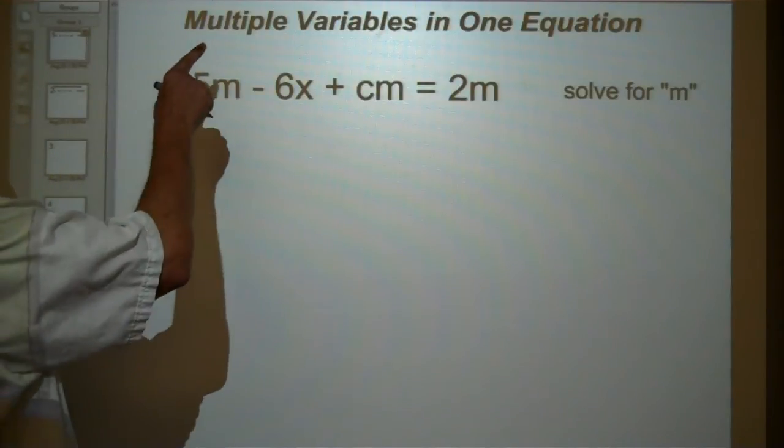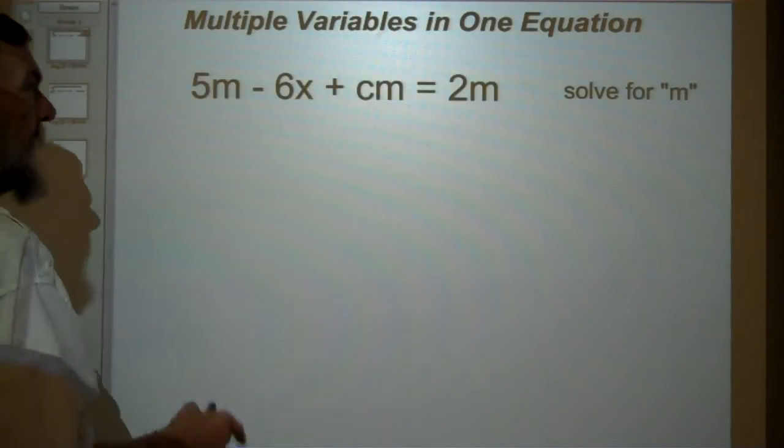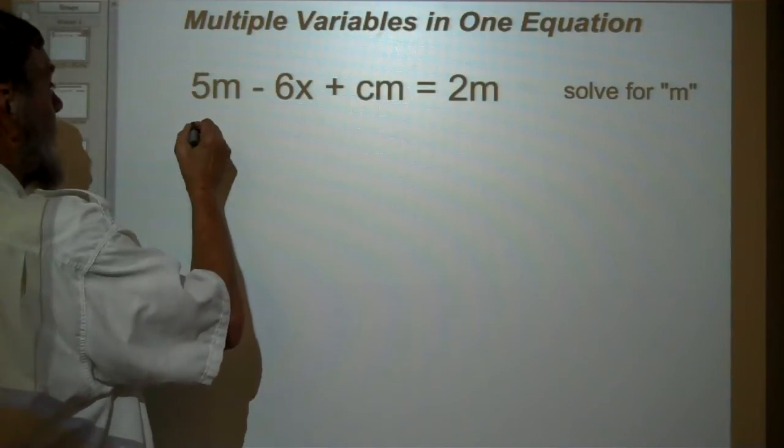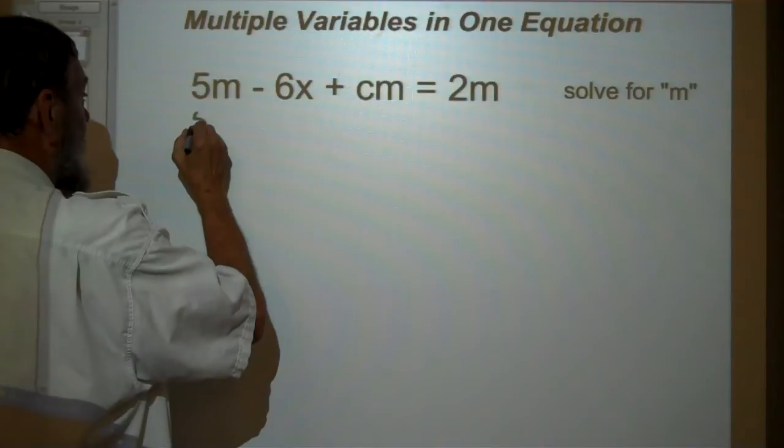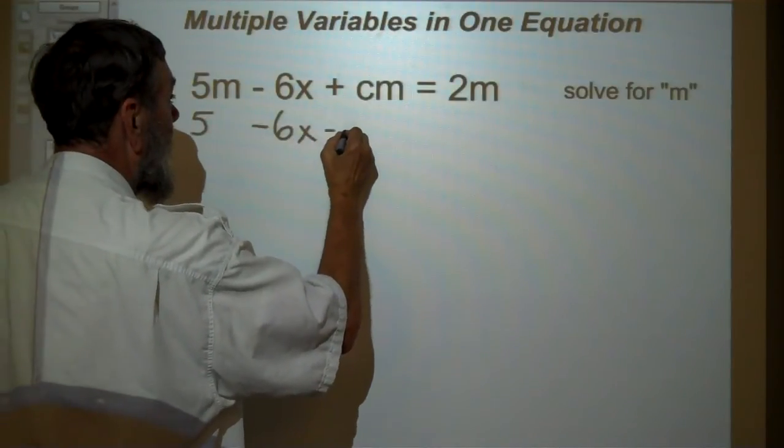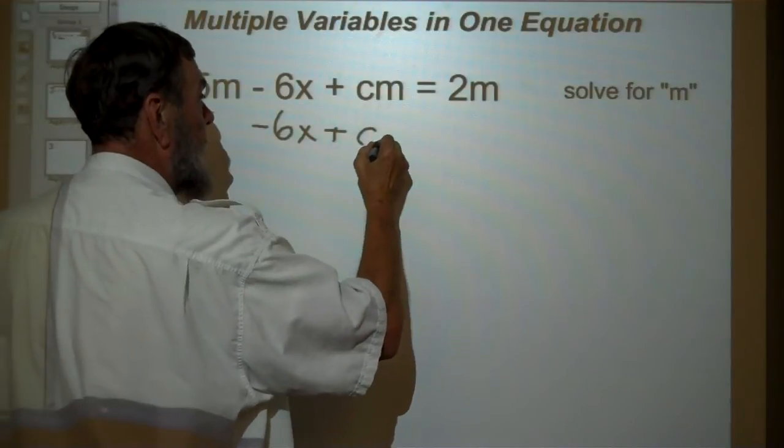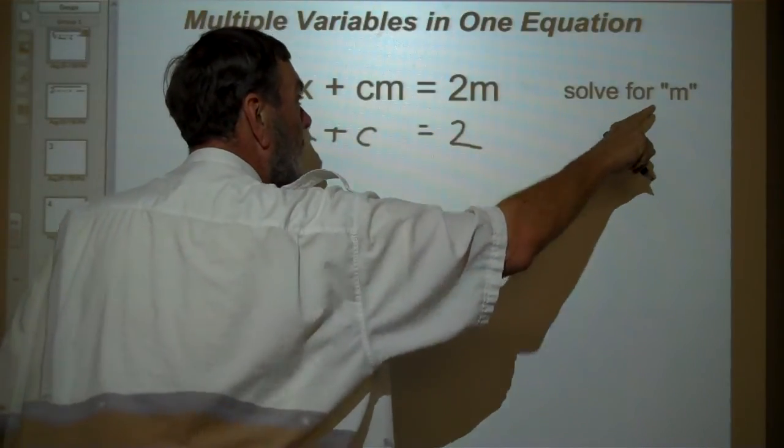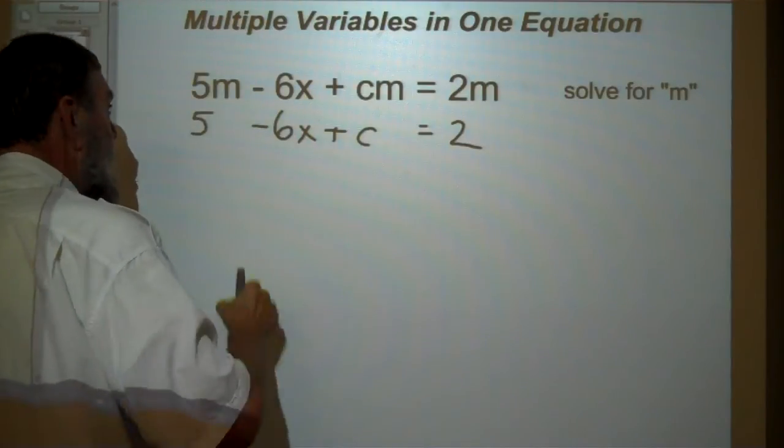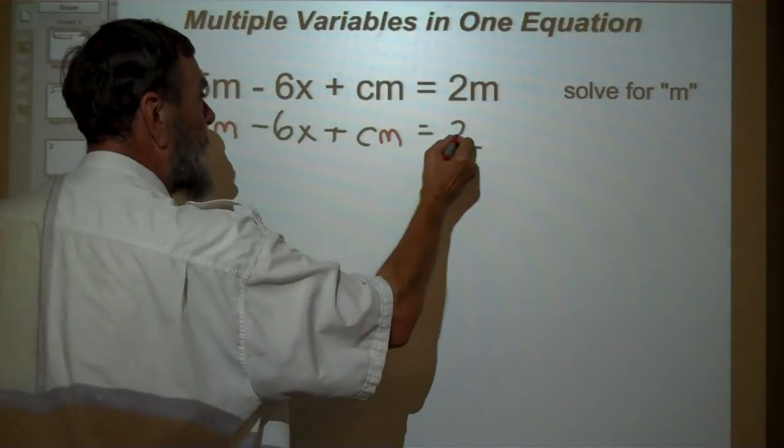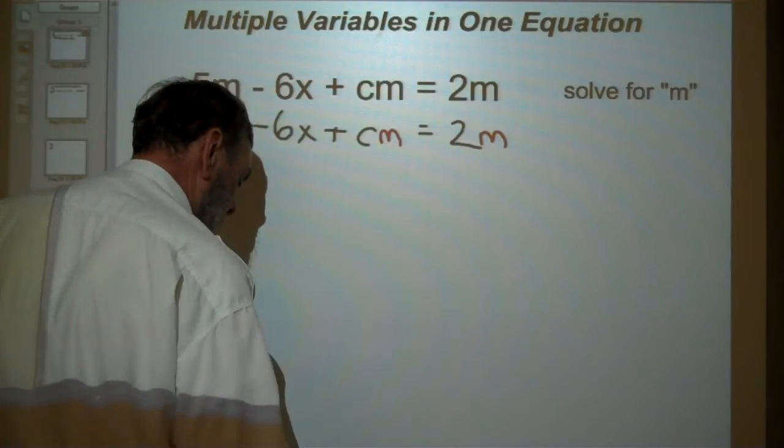Alright. Multiple variables in one equation. What does that mean commonsensically? What it means is you have an equation like this, and if you look at it, the equation says solve for m. But if you look at this, there's three of them. So how do we solve for m?